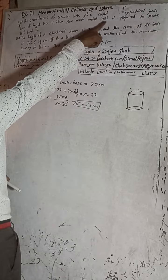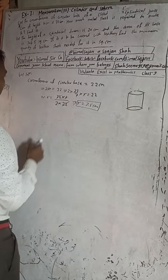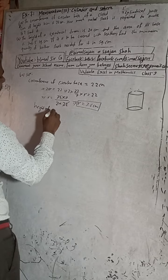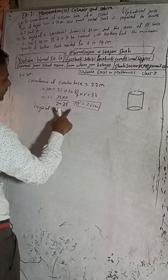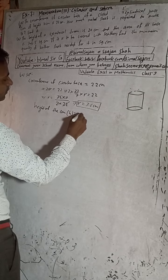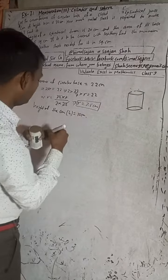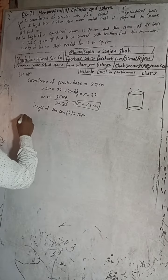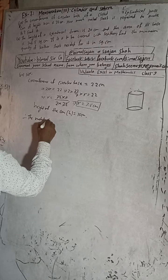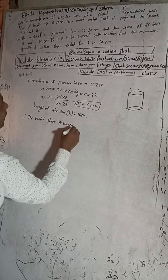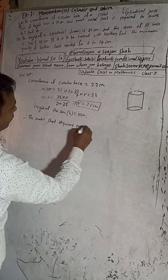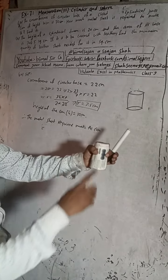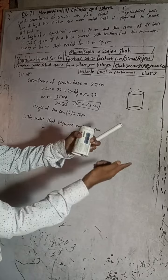Now the height — the circumference of the circular base of the closed cylinder, the height is given as 10 cm. So height h = 10 cm. We now know the radius and height. What is there to find? How much metal sheet is required to make it. Therefore, the metal sheet required to make the can is equal to the total surface area.